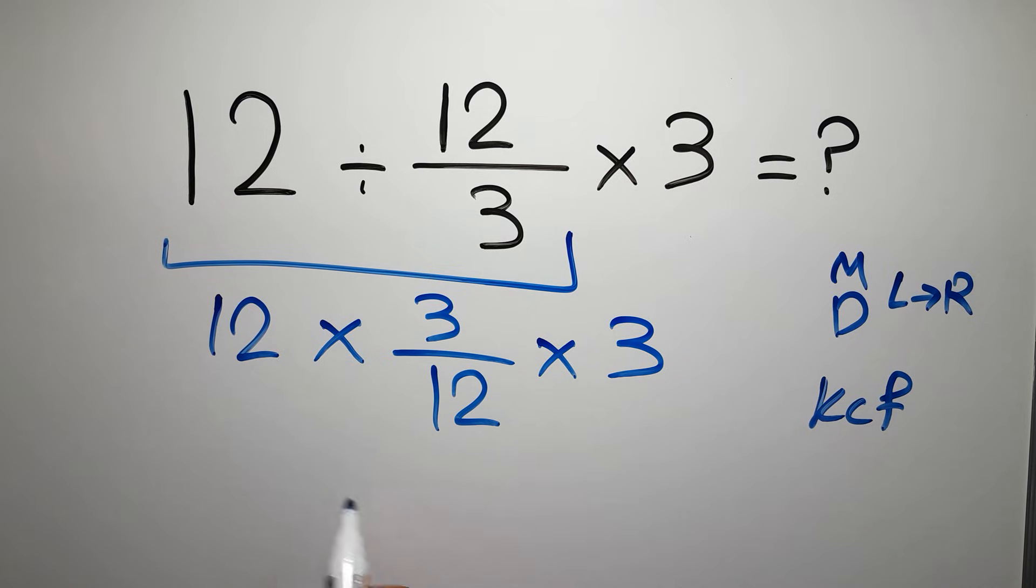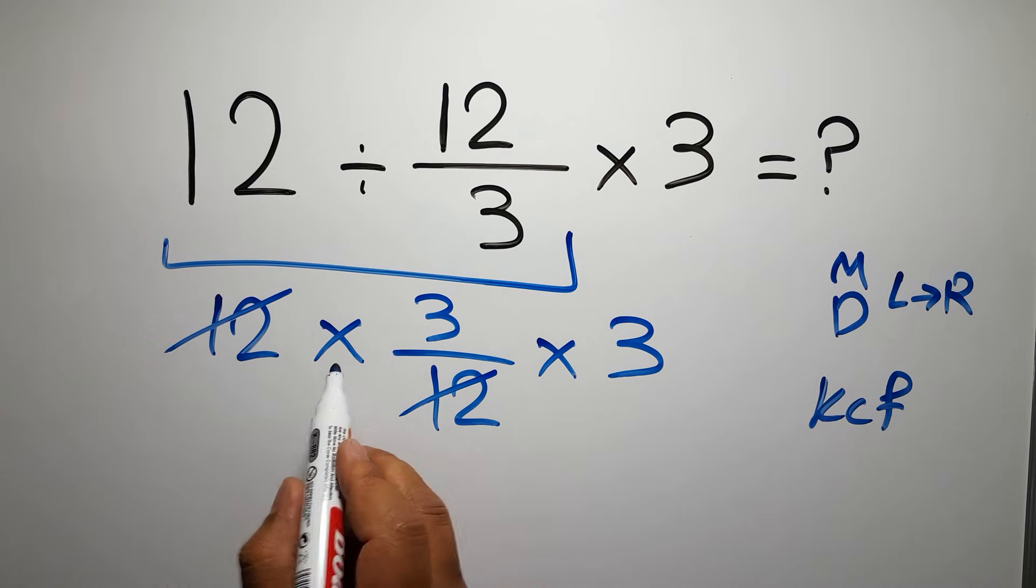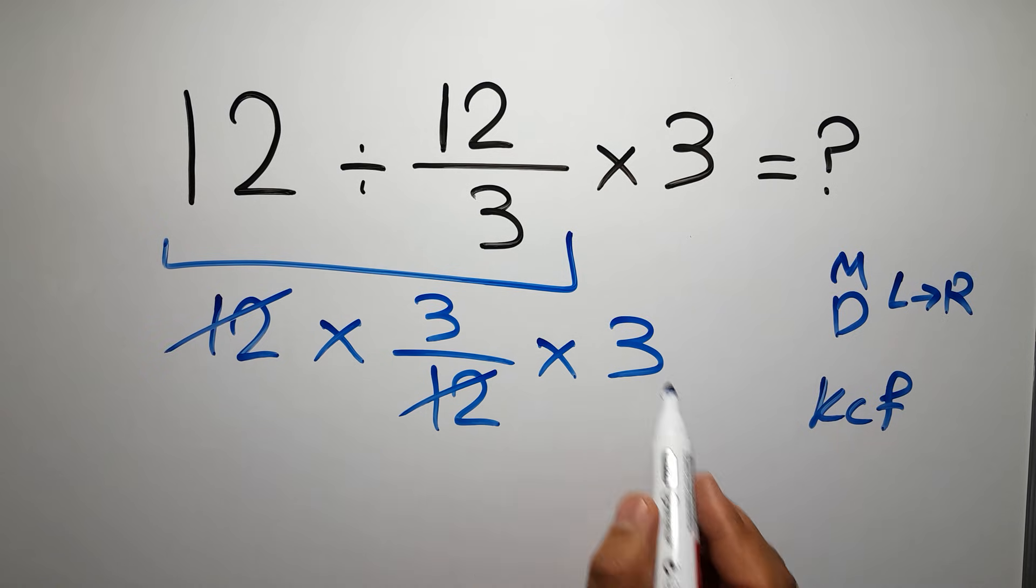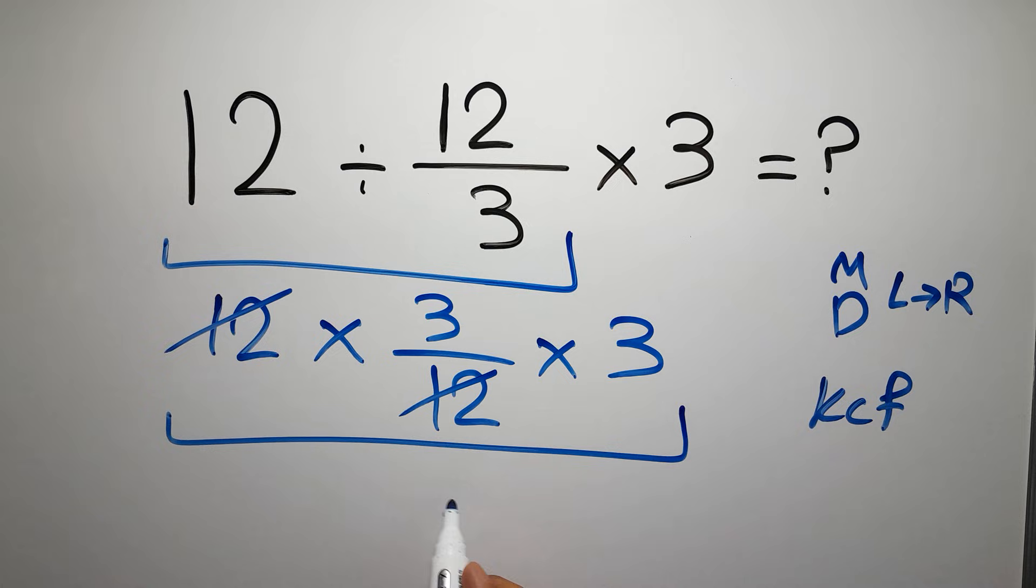We can easily cancel this 12 and this 12. So we have just 1 times 3 times 3, which gives us 9.